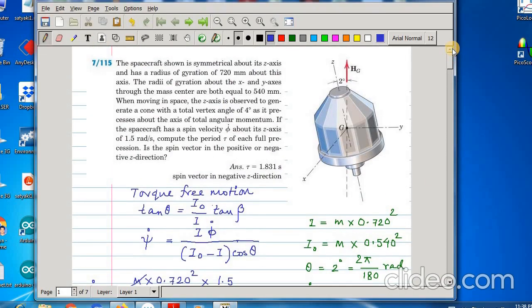So, first of all we will work out two examples. The first example is on a torque-free motion. So, here the spacecraft, this is a spacecraft and the spacecraft is symmetric about this small z axis and this small x, small y, small z axis is a non-spinning frame.